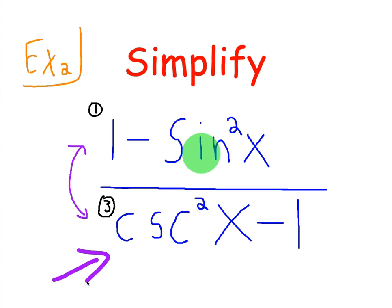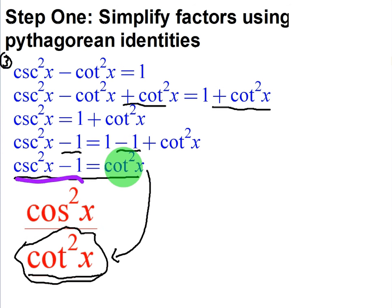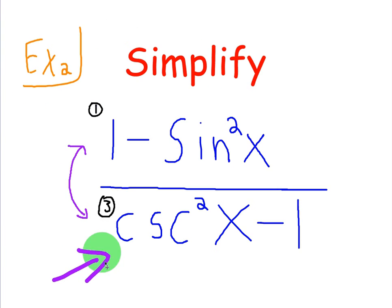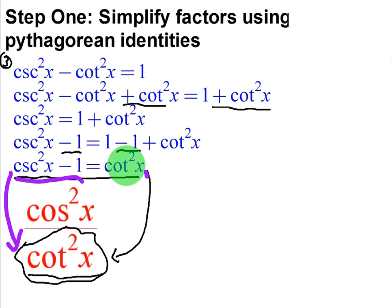Cosecant squared of x minus 1. So now that we've proven that cosecant squared of x minus 1 is equal to cotangent squared of x, we can replace the cosecant squared minus 1 with cotangent squared of x. So we've basically taken this expression, which has four terms, and we've boiled it down to two.